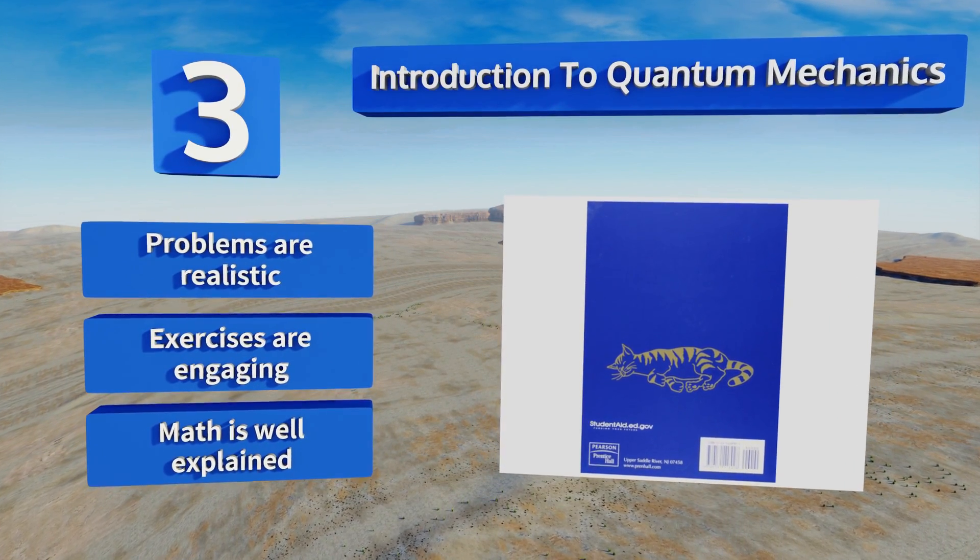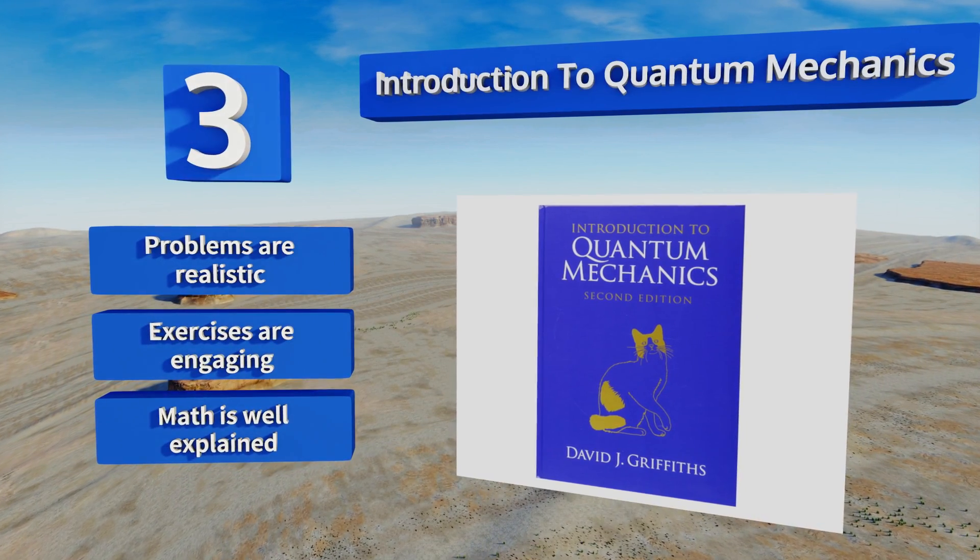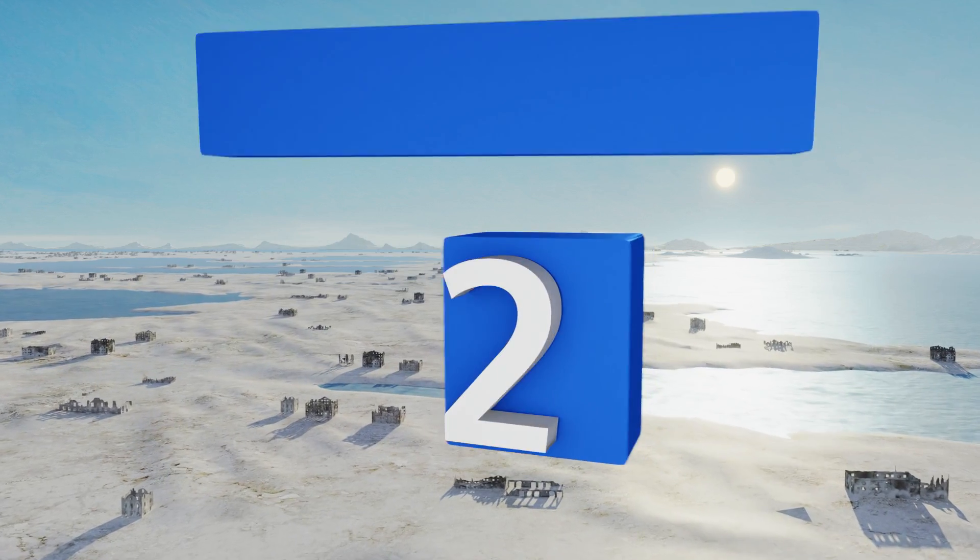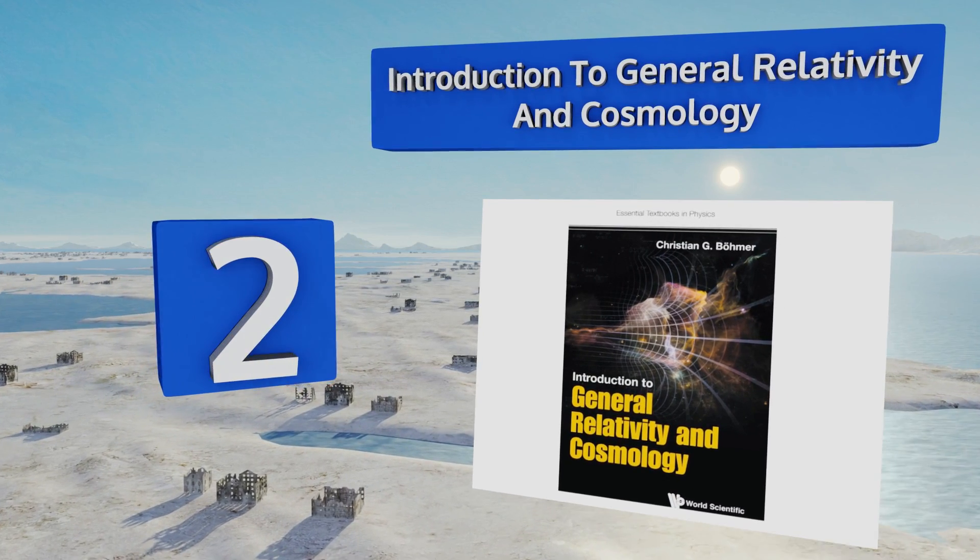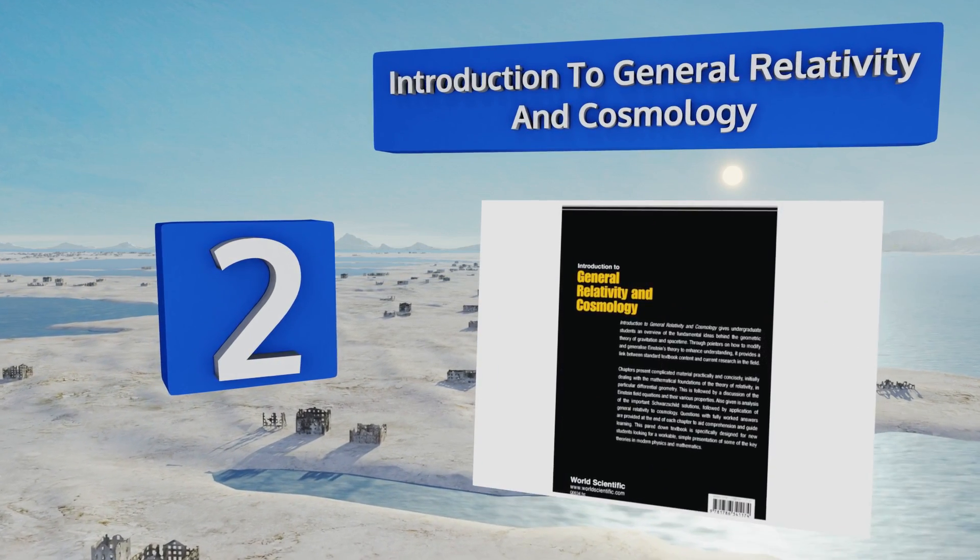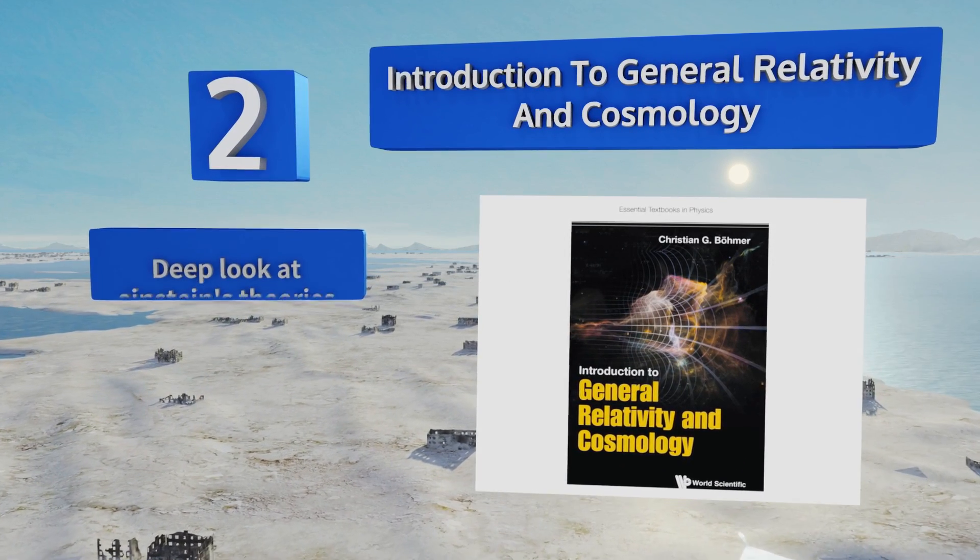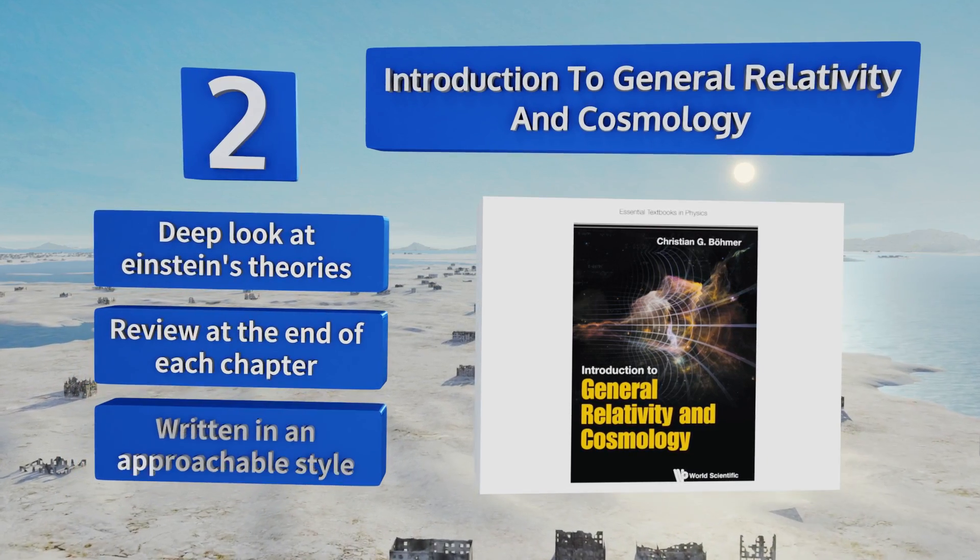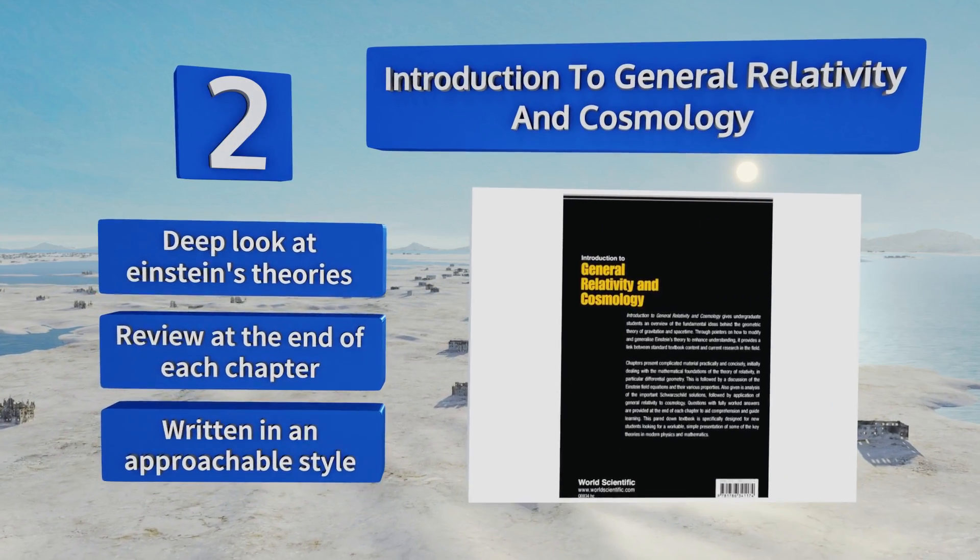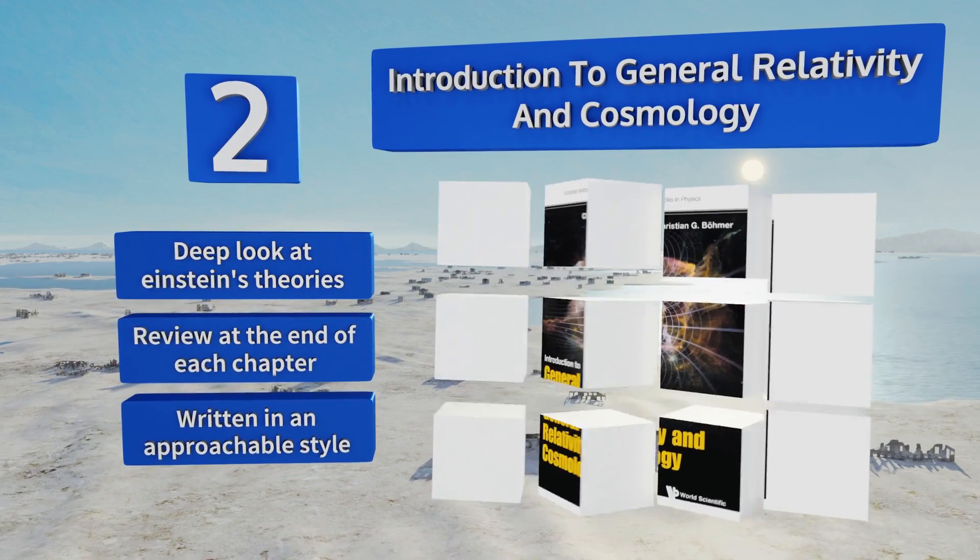At number two, Introduction to General Relativity and Cosmology by Christian G. Böhmer places an emphasis on the physical realities of the universe and space-time. As such, it's a great way to engage students with the field as it focuses on the stars. It takes a deep look at Einstein's theories and there's a review at the end of each chapter. It's written in an approachable style.